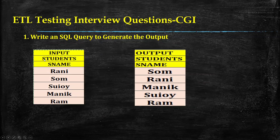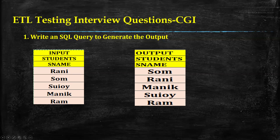Here is the question in detail. The input is a Students table with a column called s_name. The first row has 'Rani', second row 'Som', third row 'Sosohi', fourth row 'Manic', and fifth row 'Run'. The expected output is that Rani and Som should be swapped — Som goes to the first row, Rani to the second. The same swap applies to Sosohi and Manic. Since there is no sixth row, the fifth row stays intact.